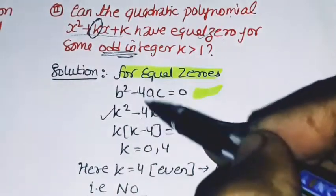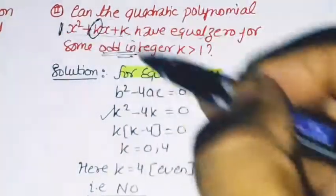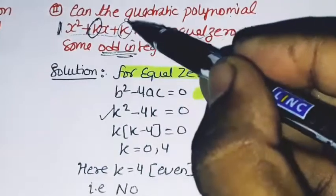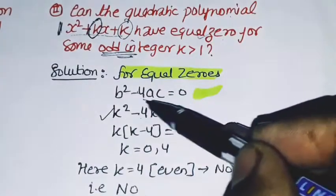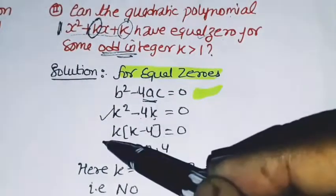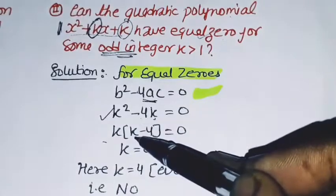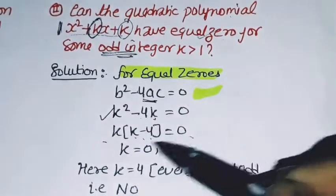So b² minus 4ac... The value of a is 1, c is k. Here k² minus 4k. Taking k common, what remains? k minus 4 equals zero.